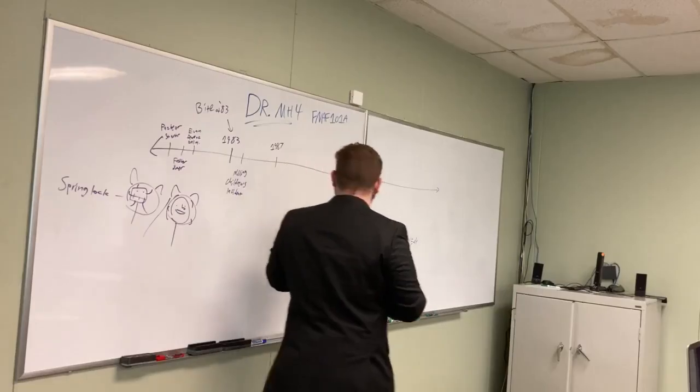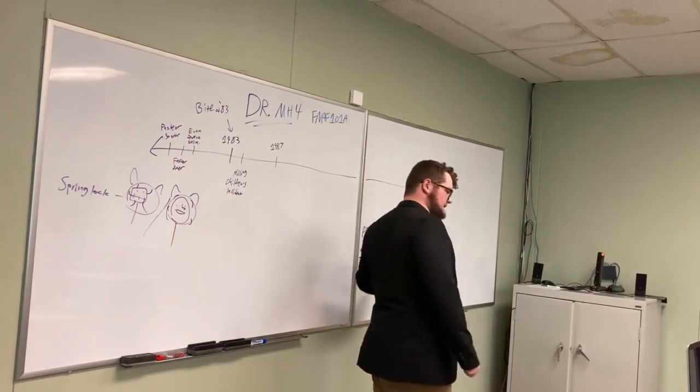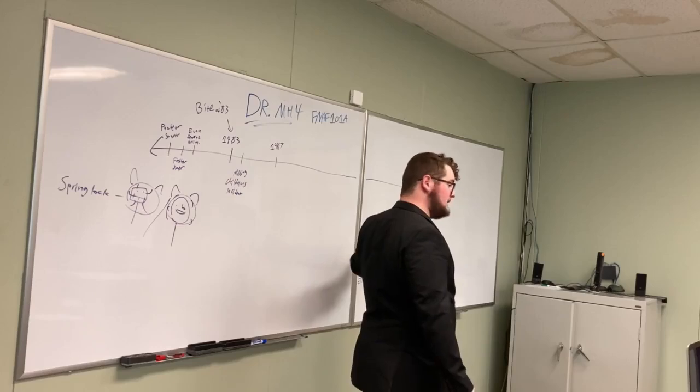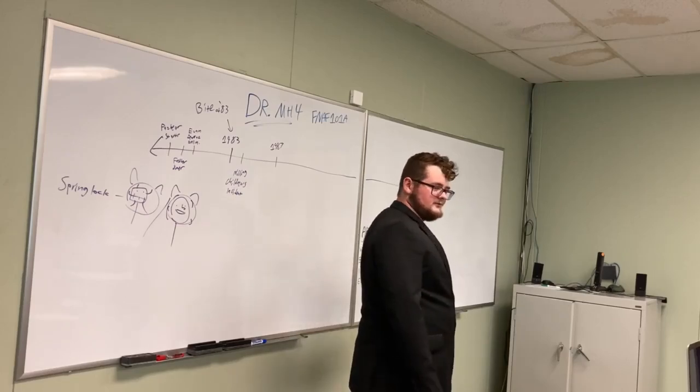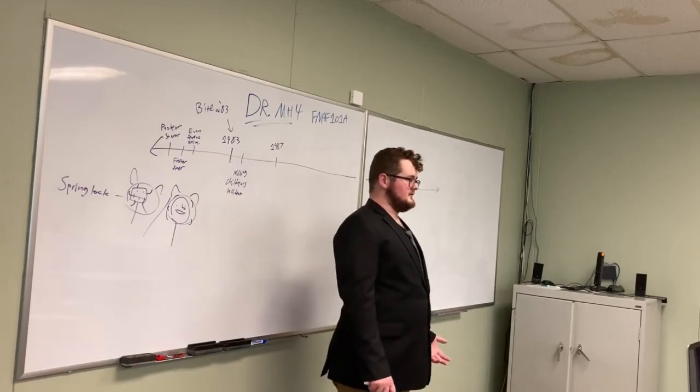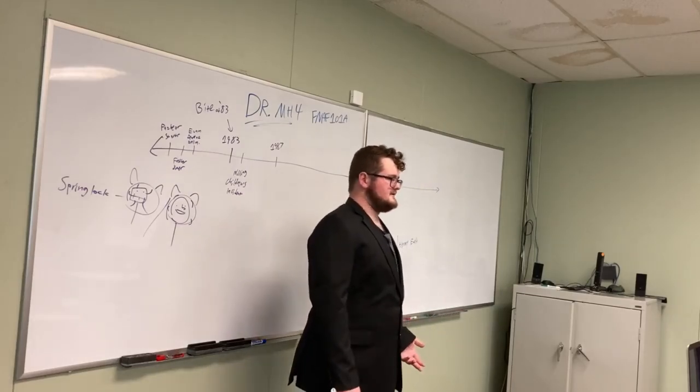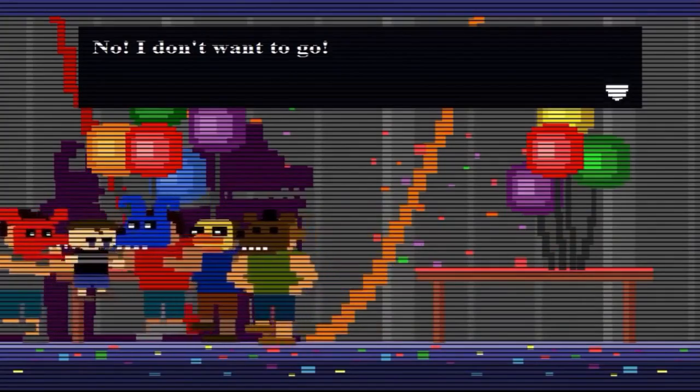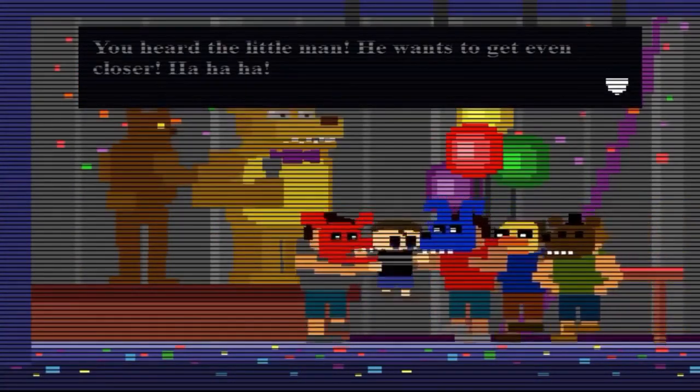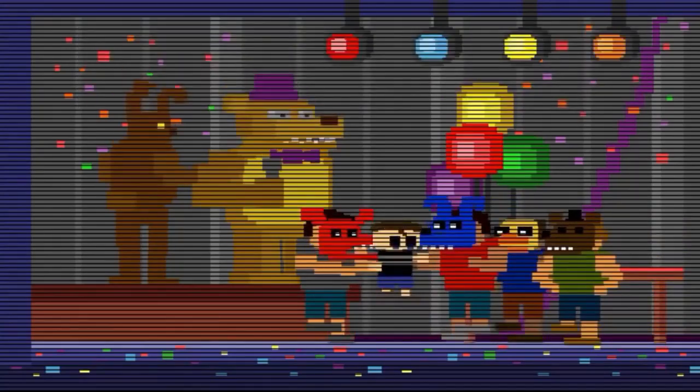So Michael is at Evan's birthday party. Which William is, you know, one of the owners of Fredbear's Family Diner. William forced Evan to have his birthday party at Fredbear's. Which, you know, he doesn't want to. He's scared of them. Michael and his friends bully and peer pressure Evan into getting close to Fredbear's mouth.